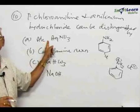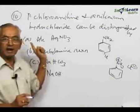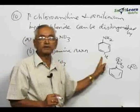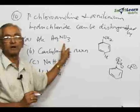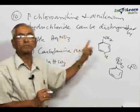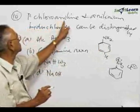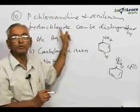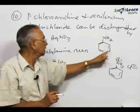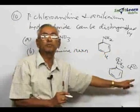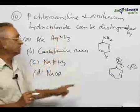One choice is alcoholic silver nitrate solution. This seems to be the right answer, because chlorine present in the nucleus will not respond to alcoholic silver nitrate — no white precipitate will be produced by parachloroaniline. Whereas anilinium hydrochloride has only a chloride ion, and it will immediately produce a white precipitate. So this is one method of distinguishing parachloroaniline from anilinium hydrochloride.